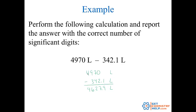We have to look at the last significant place in each number. For 4,970: this trailing zero has no decimal, so it's not significant — the last significant place is the tens. For 342.1: significant digits go out to the tenths place. The least precise is 4,970, which only goes out to the tens. Rounding 4,627.9 after the tens: the 7 tells me to round up, giving 4,630 — with a placeholder zero in the ones place.